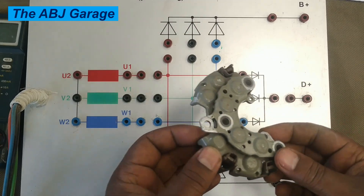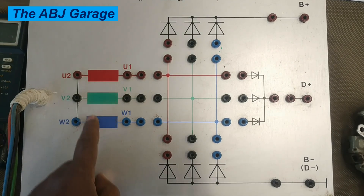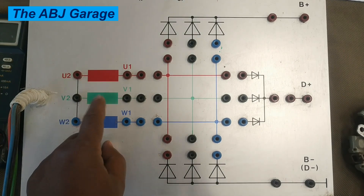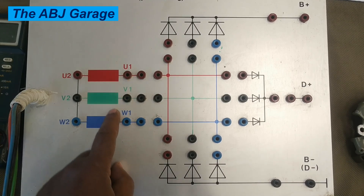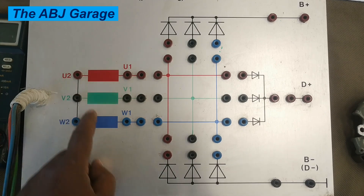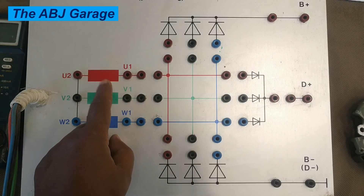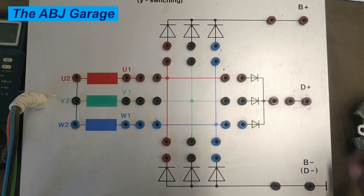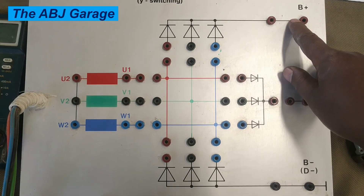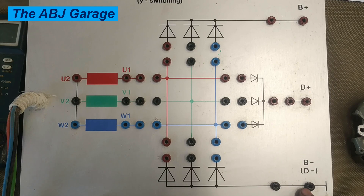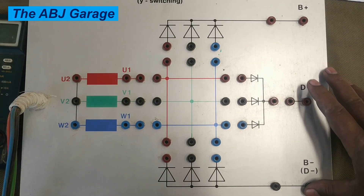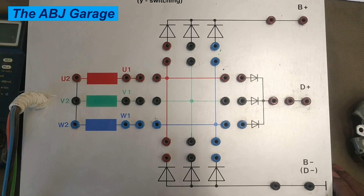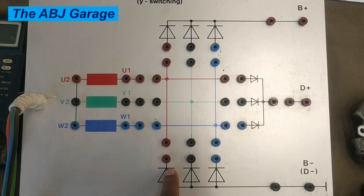When the alternator is producing voltage, these are the three coils that are generating voltage in an alternator. Let's call them U, V, and W. The alternator actually generates a three-phase alternating current. That alternating current will be distributed to the electrical circuits as positive and negative. So in order to transfer the three-phase into a DC, it has to be rectified.